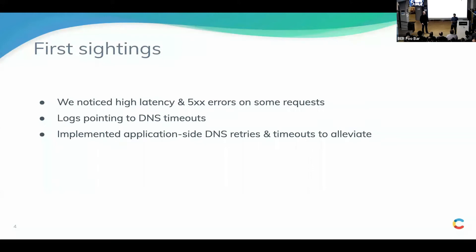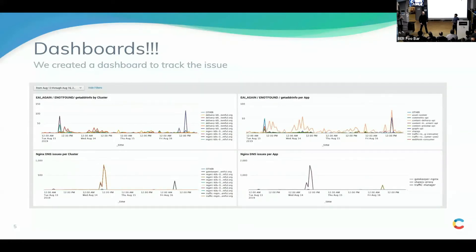We started seeing a couple of 500 errors and customers reported seeing a lot of timeouts and latencies from APIs. It turns out we've been seeing a lot of DNS errors when two services talk to each other. This is quite rare because we run within a single data center, within a single cluster in the same region. We immediately patched things on the application side by setting up retries and timeouts while resolving DNS. This happened across multiple clusters and different services — not singular to Node.js or the Ruby stack.